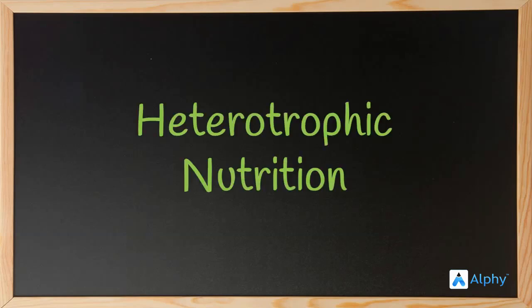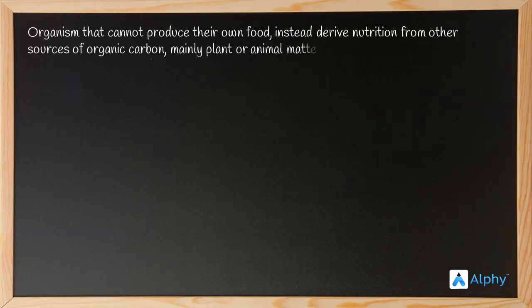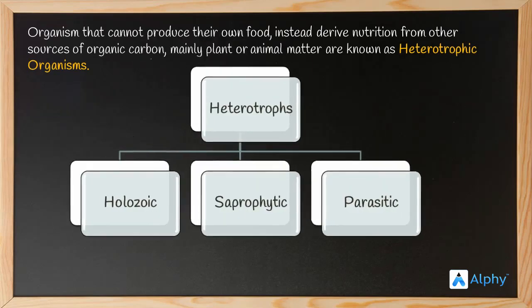In this video we shall discuss the heterotrophic mode of nutrition. We have already discussed in our previous video that organisms that cannot produce their own food, instead deriving nutrition from other sources of organic carbon, mainly plants or animal matter, are known as heterotrophic organisms.